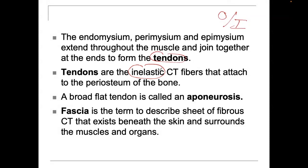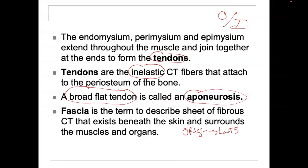Tendons are inelastic connective tissue that attach to the periosteum — there's not a lot of give to tendons. When you have a broad, flat tendon, we call it an aponeurosis. For example, when you look at the origin of the latissimus dorsi — the lats — it's called the thoracolumbar aponeurosis. And the insertion site of the biceps brachii is called the bicipital aponeurosis.